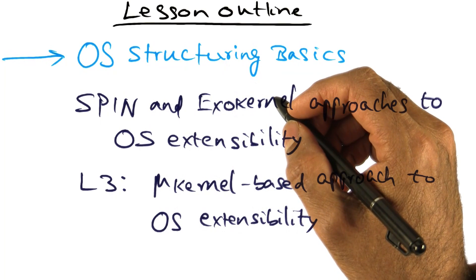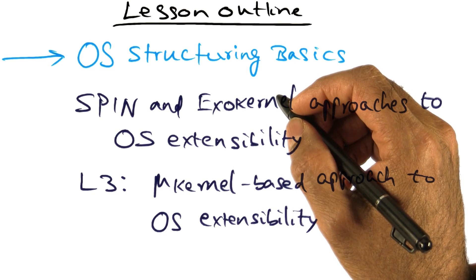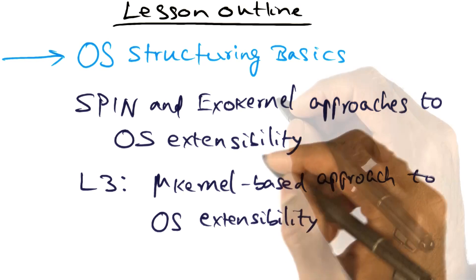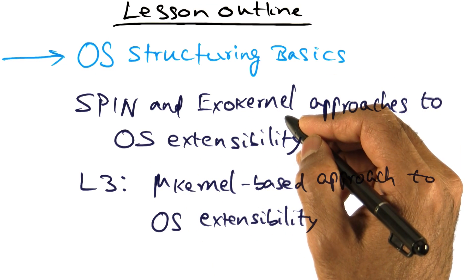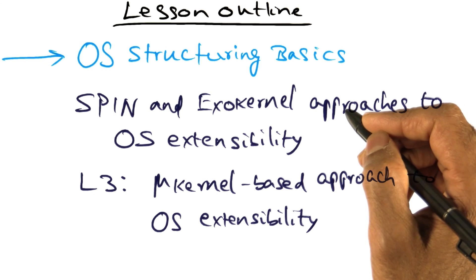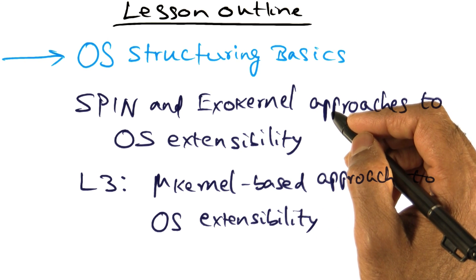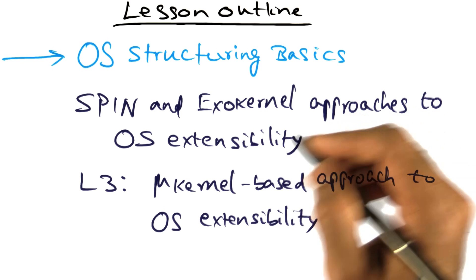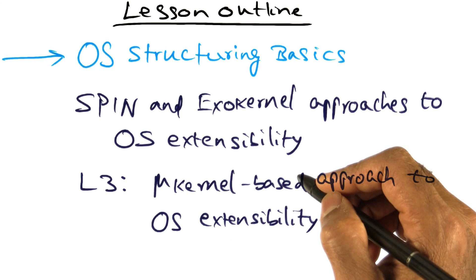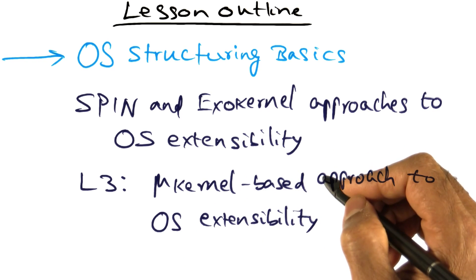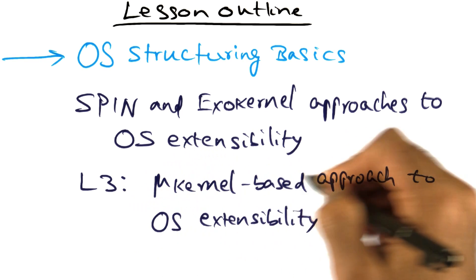Does this flexibility have to come at the price of performance and/or safety of the operating system? These are some of the questions we will try to answer in this course module. We will learn the basics of operating system structuring issues, using SPIN and exokernel as case studies of two closely related approaches to providing extensibility of operating system services. We will then study a microkernel-based approach as well, using the L3 microkernel.